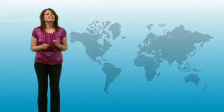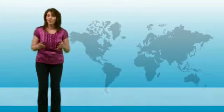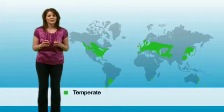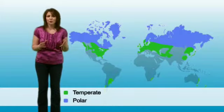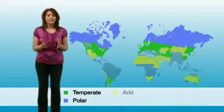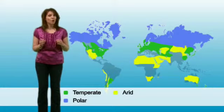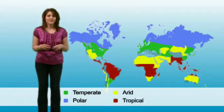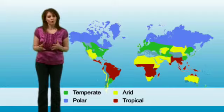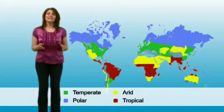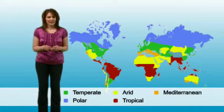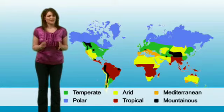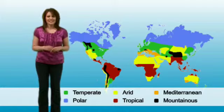There are six different climate zones. These are: temperate, where winters are cold and summers are mild; polar, where it's very cold and dry all year round; arid, where it stays dry and hot; tropical, where it stays hot and wet all of the year; Mediterranean, where the winters are mild and the summers hot and dry; and mountainous, where it stays very cold throughout the year.